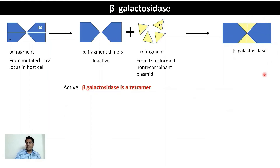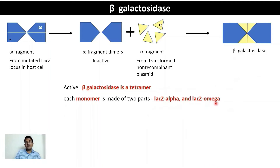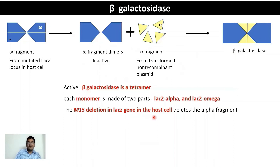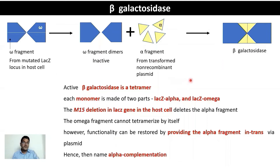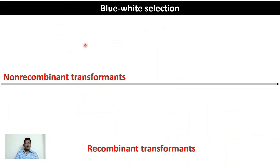Active beta-galactosidase is a tetramer: four omega fragments and four alpha fragments join together to form the functional enzyme. Each monomer is made up of the lacZ alpha and lacZ omega parts. In non-recombinant transformants, the omega part comes from the host cell and the alpha part from the plasmid, combining to give functional beta-galactosidase. The M15 deletion in the lacZ gene in the host cell deletes the alpha fragment; functionality is restored by providing the alpha fragment in trans via the plasmid. This process is known as alpha complementation.